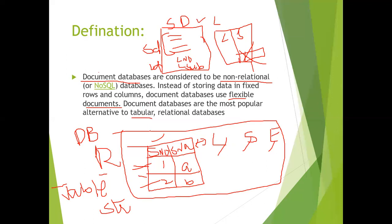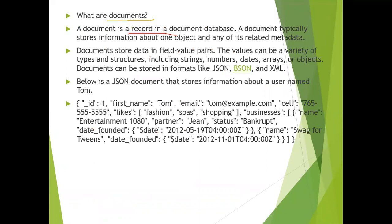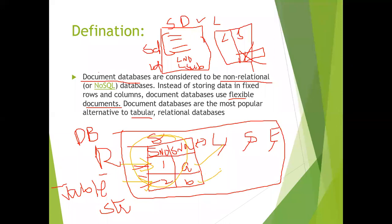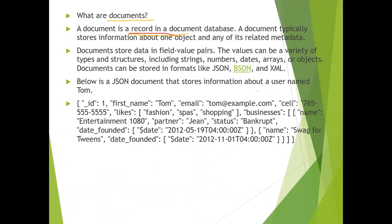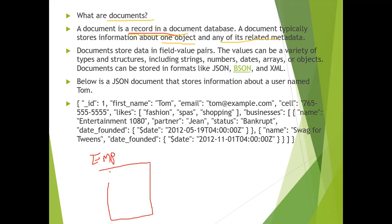A document is a record in a document database. In a student database, what is called a student-one record or student-two record in a relational model is called a document in the document model. A document typically stores about one object and any of its related metadata. For example, in a document of employee, employee is the object.